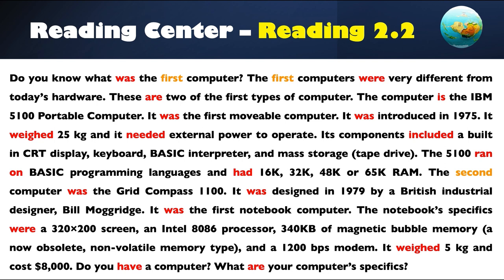The first computers were very different from today's hardware. These are two of the first types of computer. The computer is the IBM 5100 portable computer. It was the first movable computer. It was introduced in 1975. It weighed 25 kilograms and it needed external power to operate. Its components included a built-in CRT display, keyboard, BASIC interpreter, and mass storage tape drive. The 5100 ran on BASIC programming languages and had 16K, 32K, 48K, or 65K RAM.